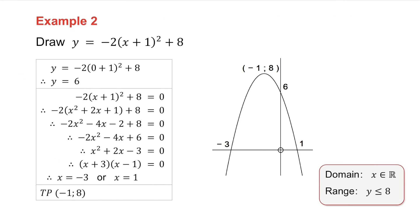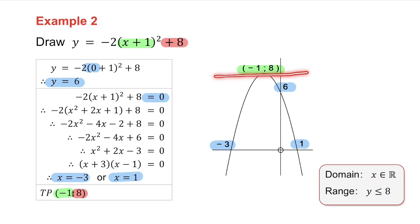The second example is also a parabola. To find the y-intercept, make x equal to 0 and you get y equals 6. To find the x-intercepts, make y equal to 0 and you get x equals minus 3 or 1. To find the turning point, the bracket gives you an x value of minus 1, and the 8 on the end gives you the y value of 8. So the y-intercept is 6, the x-intercepts are minus 3 and 1, and the turning point is (minus 1, 8). The domain is x an element of R, and since 8 is the highest the graph goes, the range is y less than or equal to 8.